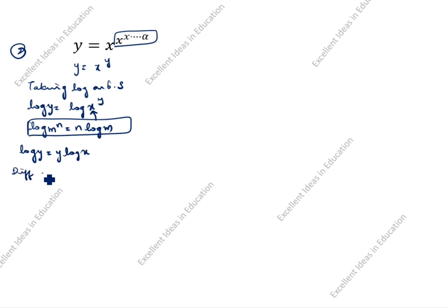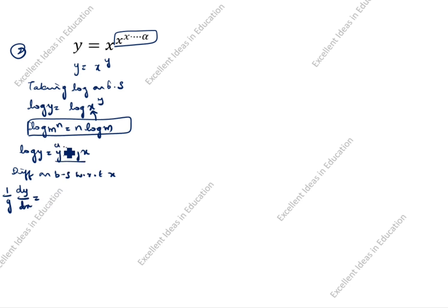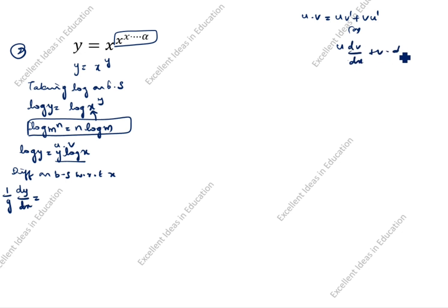Differentiating both sides with respect to x: the left side gives (1/y)·dy/dx. The right side, y·log x, is a product, so we apply the product rule: u·dv/dx + v·du/dx.